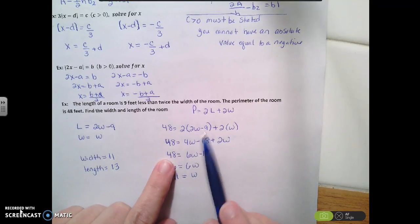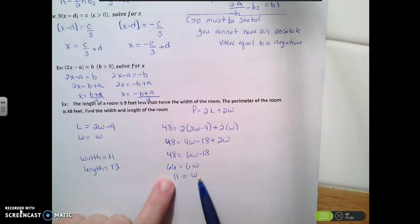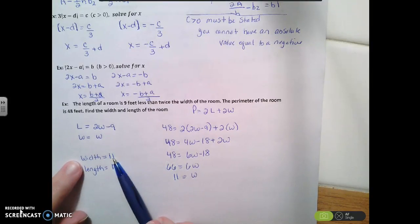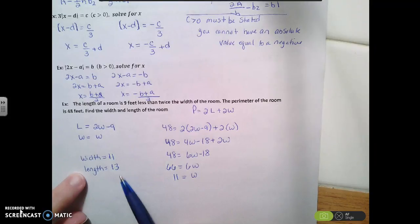So now we're going to solve this. We're going to distribute. We're going to combine like terms. We're going to move that 18, and then divide by 6, so the width is 11. So the width of the room is 11. Substitute that back in here. 2 times 11 minus 9. So the length of the room is going to be 13.